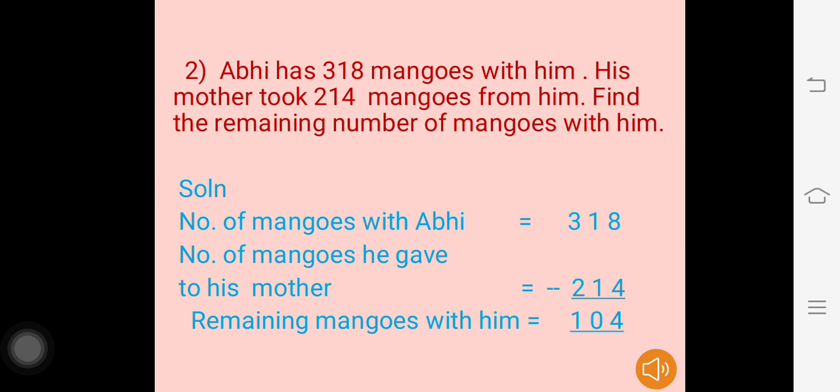Going to our next question. Abhi has 318 mangoes with him. His mother took 214 mangoes from him. Find the remaining number of mangoes with him. Total number of mangoes are 318; he gave 214 mangoes to his mother. The solution: number of mangoes with Abhi is 318, number of mangoes he gave to his mother is 214.